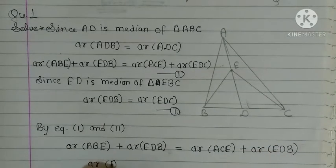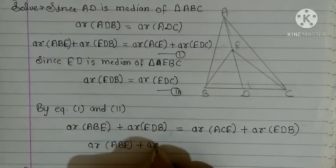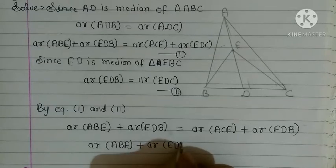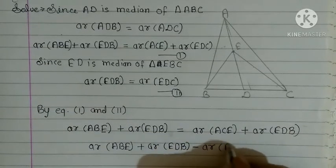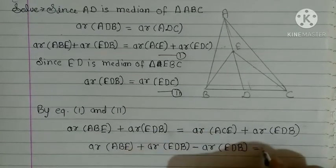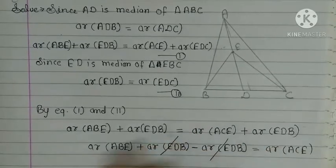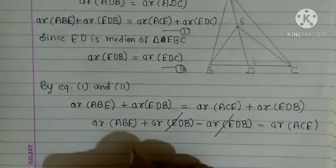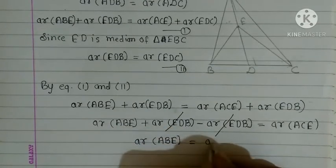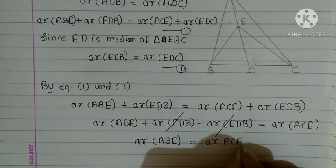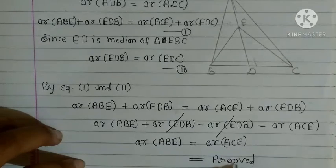Area ABE plus area EDB minus area EDB equal area ACE. यह plus और यह minus cancel. तो यहाँ क्या रह गया, area ABE equal area ACE. और यही हमें proof करना था। Proved.